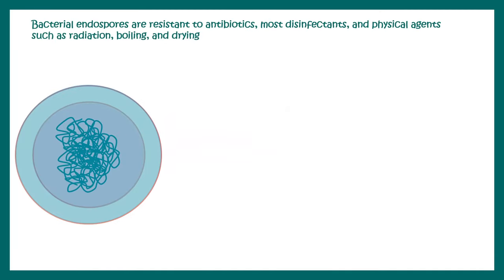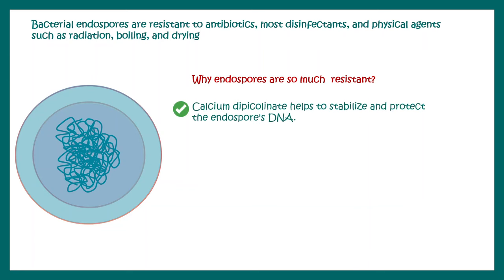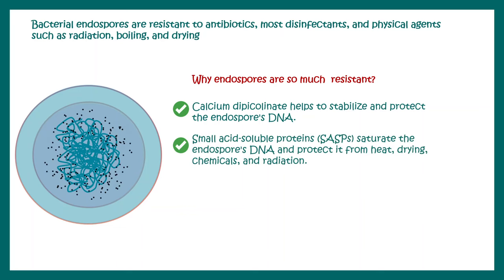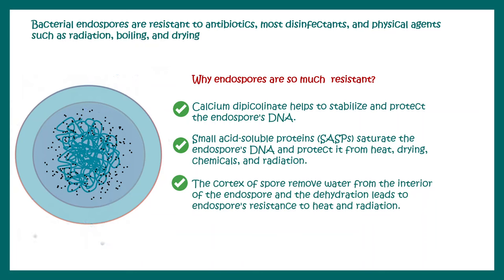Now let's look at how spores are resistant to so many harsh environmental situations. Endospores are resistant to antibiotics, disinfectants, and physical agents. Calcium dipicolinate — a conjugation of dipicolinic acid with calcium — helps to stabilize and protect the endospore DNA. Small acid-soluble proteins, known as SASPs, protect endospore DNA from heat, drying, chemical agents, and radiation.